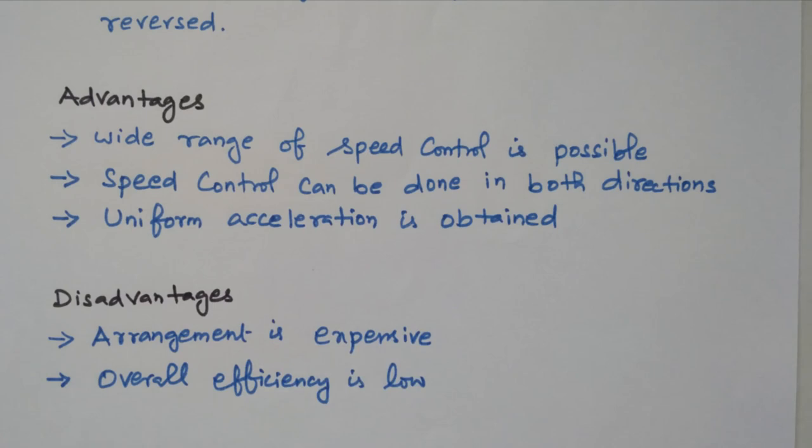In this video we discussed what is the speed control of DC motor, what are the parameters, and what are the methods. We discussed the speed control of DC shunt motor with three different methods. Subscribe the channel for more videos and notifications. The soft copy of this material is available in the drive — the link is given in the description box. Thank you for listening.